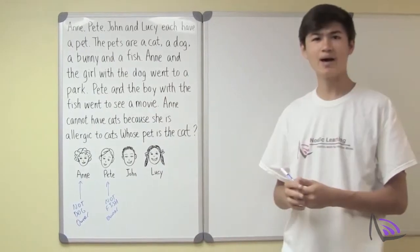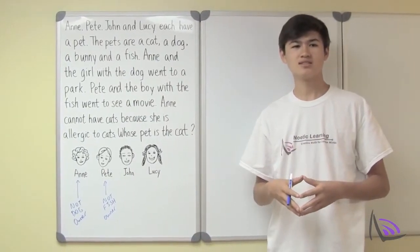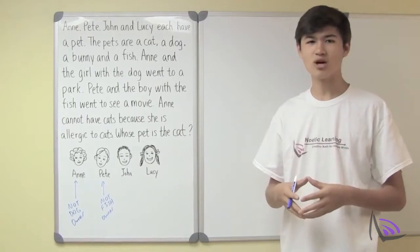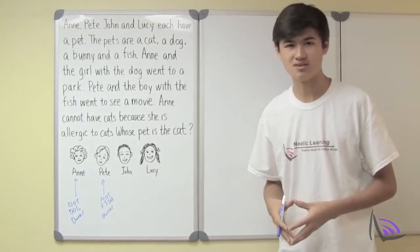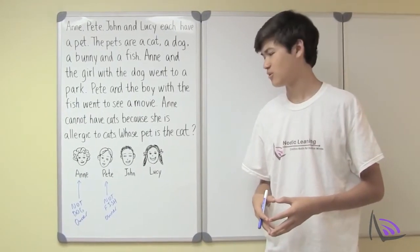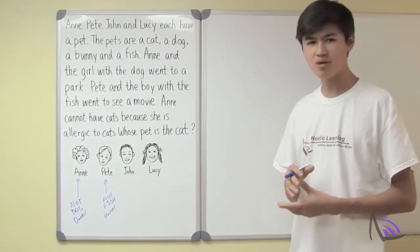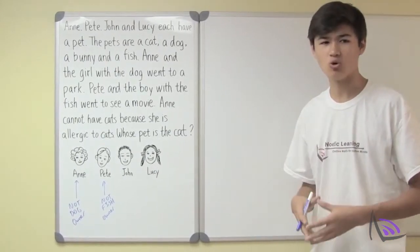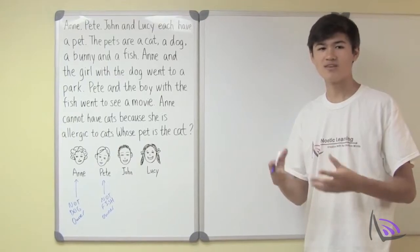Okay, I think I see a pattern. It looks like what we need to do is we need to find a way to keep track of who is not the owner of specific pets. But how do we do that? So let's try making a table to organize all the given facts.